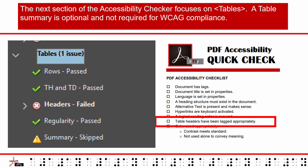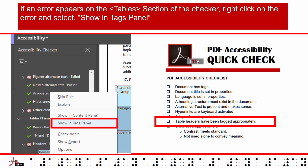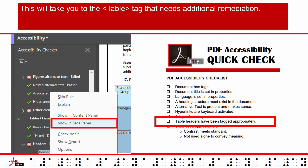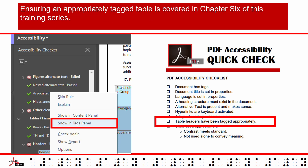The next section of the Accessibility Checker focuses on Tables. A table summary is optional and not required for WCAG compliance. If an error appears on the Tables section of the checker, right-click on the error and select Show in Tags panel. This will take you to the table tag that needs additional remediation. Ensuring an appropriately tagged table is covered in Chapter 6 of this training series.